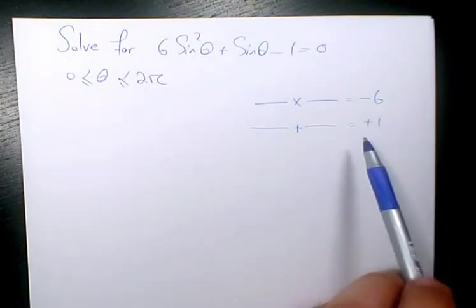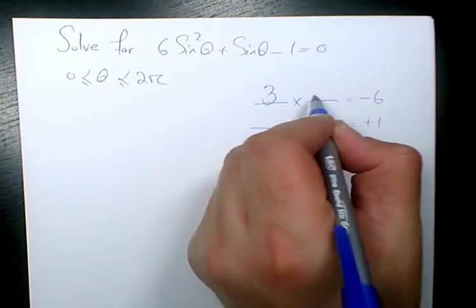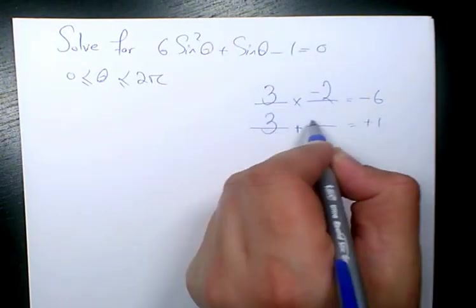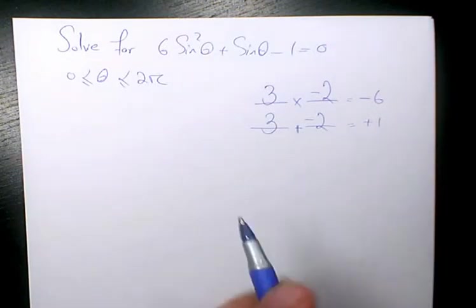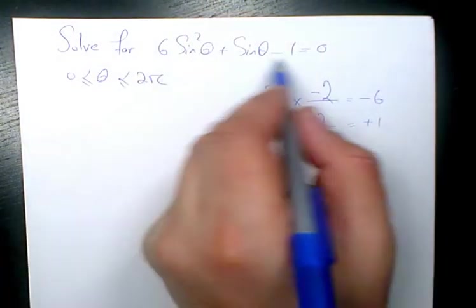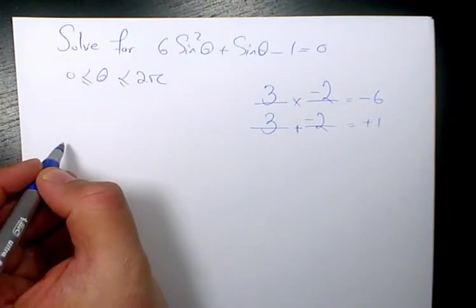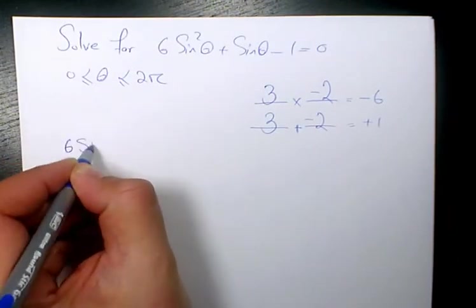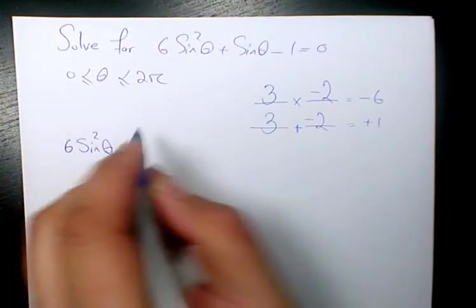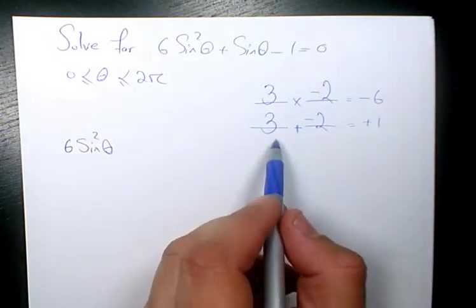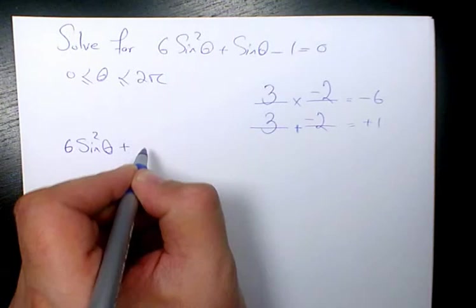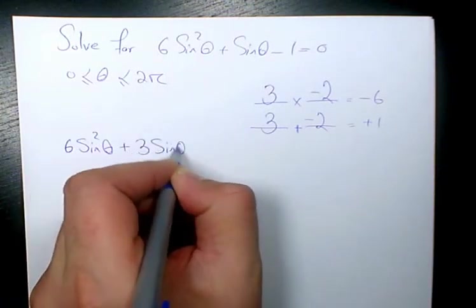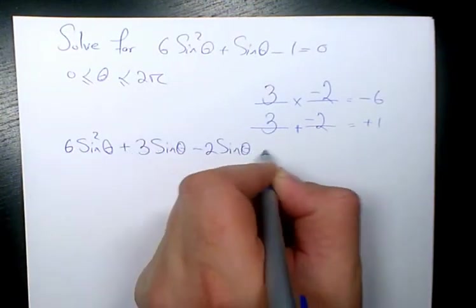We are looking for two numbers that multiply to negative 6 and add to positive 1. These two numbers are 3 and negative 2. When you multiply this it's negative 6, and when you add it it's positive 1. Then I will rearrange the original equation: 6 sine squared theta, and instead of plus sine theta I will write 3 sine theta minus 2 sine theta.